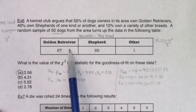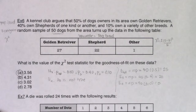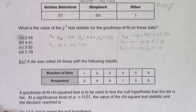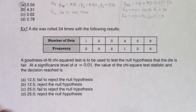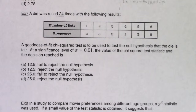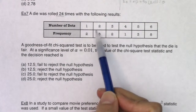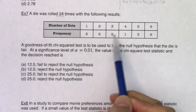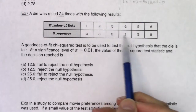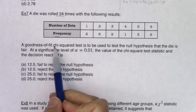For the TI-84, it's a matter of putting your observed into L1, calculating your expected and putting them into L2, then running the test. Now let's look at example seven and figure out what is the variable. A die was rolled 24 times with the following results: face one came up twice, two came up eight times, three two times, and so on. We have frequencies here.